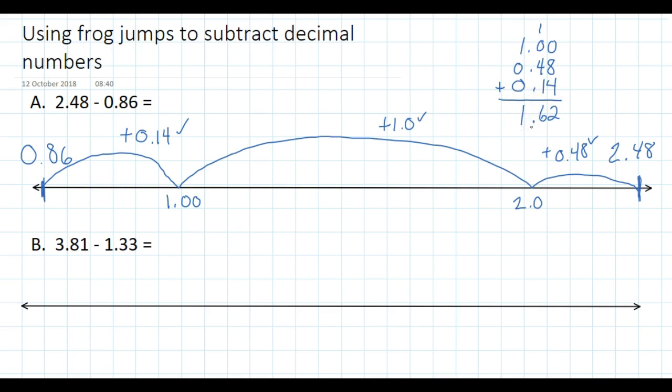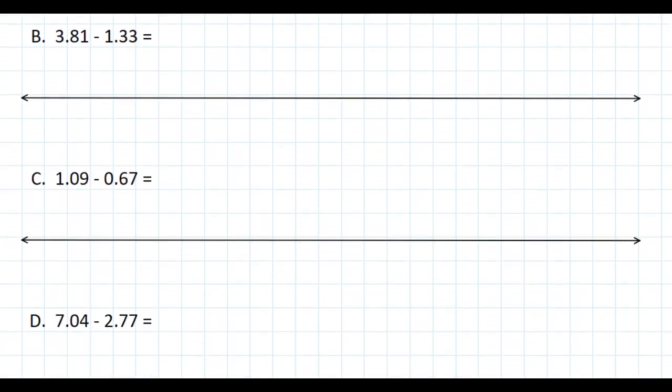So that's that particular question. Let's do one from scratch and see how you do. This is 3.81 subtract 1.33. The smallest number is going to go at this end, so I'm going to write in 1.33. The biggest number goes at this end, and that's going to be 3.81.